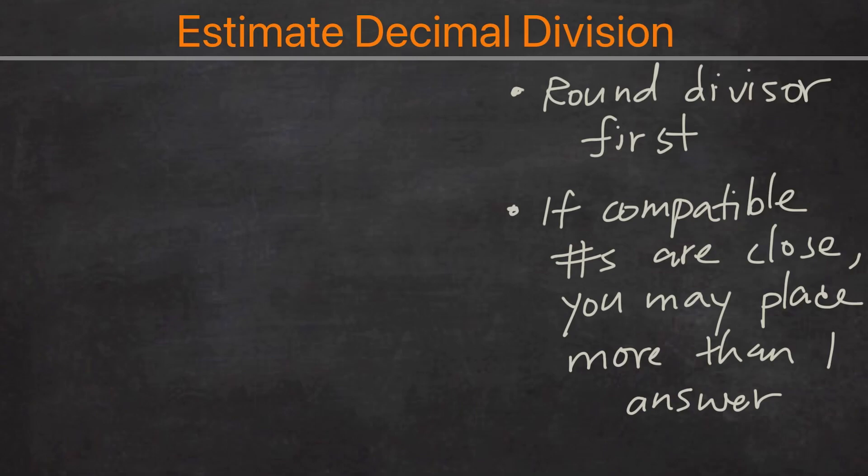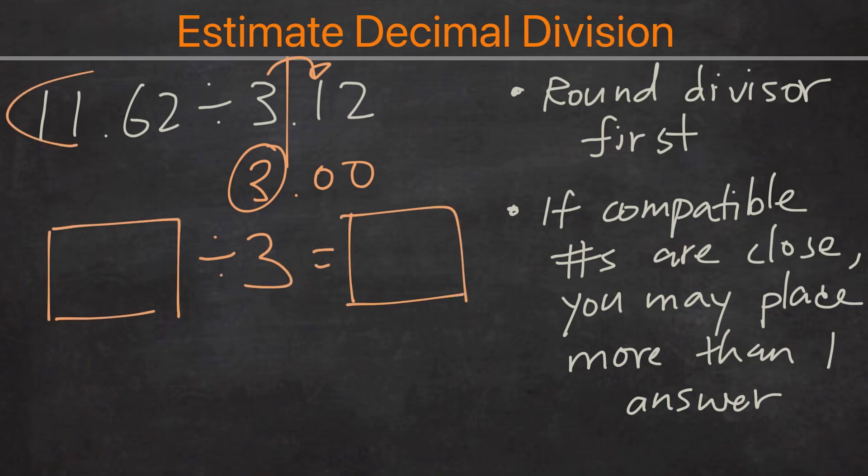And now we're going to get to the last example before the quiz problem: 11.62 divided by 3.12. So here we're going to round the divisor, this will become 3. And looking at this number, if we were to round the 11 to 12, we will have 12, so 12 divided by 3 is 4, so this could work. Now what about if we go down? So if we go down it would be 12 minus 3 because of the divisor, become 9. So this one is simple, we can tell that 12 is much closer to 11.62 than 9 would be to 11.62.